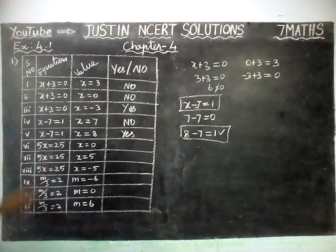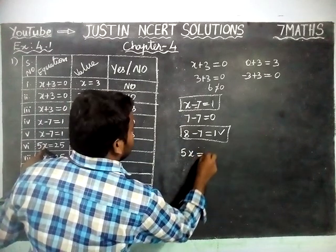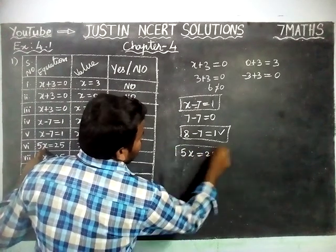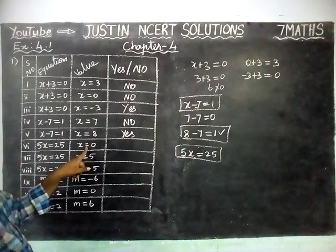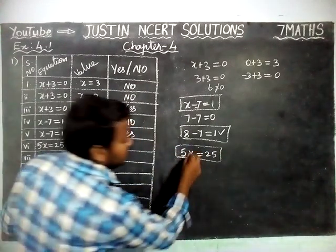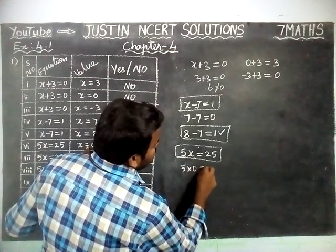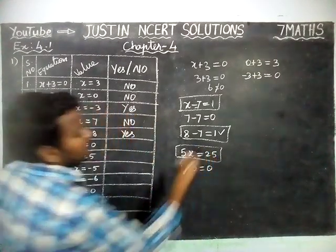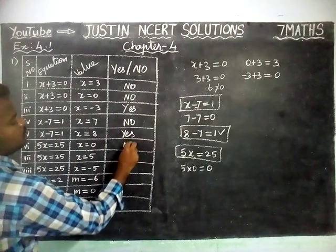Next question: 5X equal to 25. We are going to substitute X is equal to 0. If we substitute X is equal to 0, 5 into 0 is equal to 0 — this is not satisfied. So no.